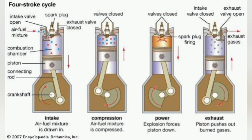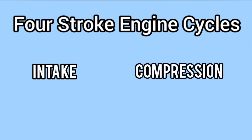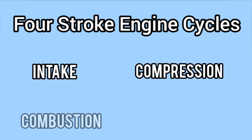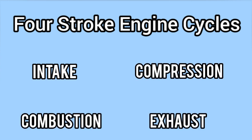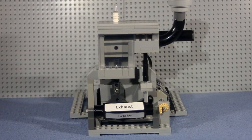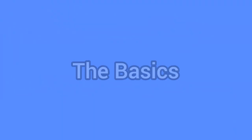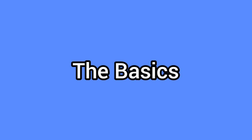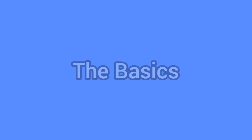The most common type of engine is the four-stroke engine. The four-stroke engine is named this because it has four strokes, or cycles, which are intake, compression, combustion, and exhaust. I've made this Lego engine model to help explain how engines work. Let's begin with the basic components of a four-stroke gasoline engine.